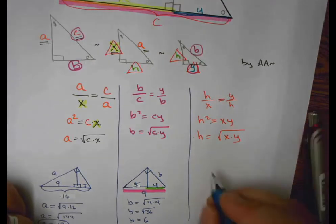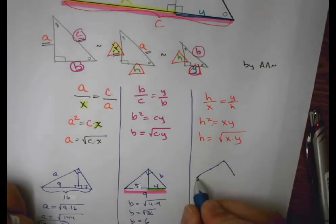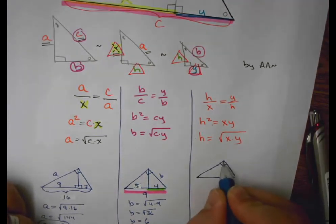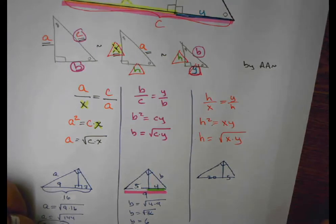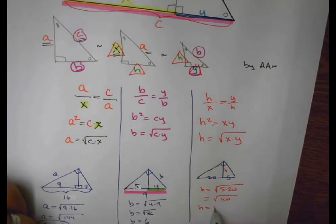I can cross-multiply and discover that H is the geometric mean between X and Y, such that if I know that this splits into, say, 5 and 20, I could find H by saying H is equal to the square root of 5 times 20, square root of 100, so H is equal to 10.